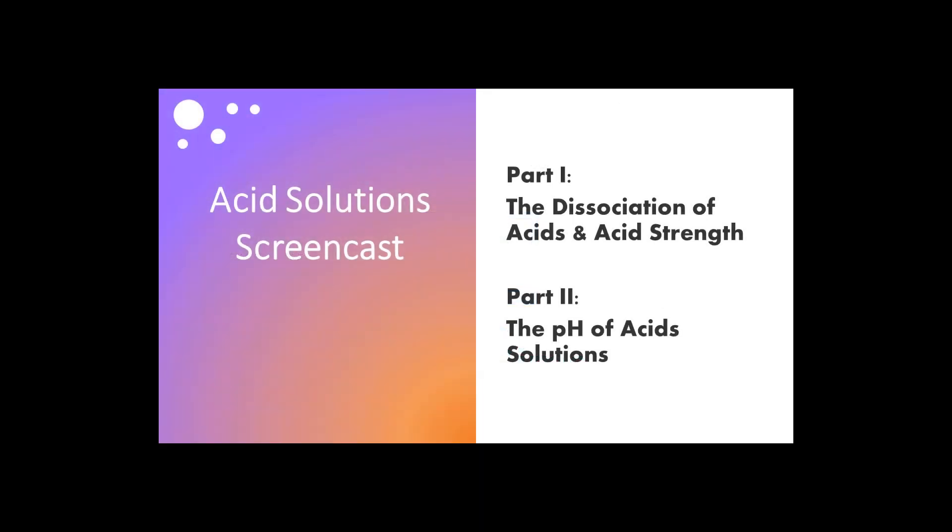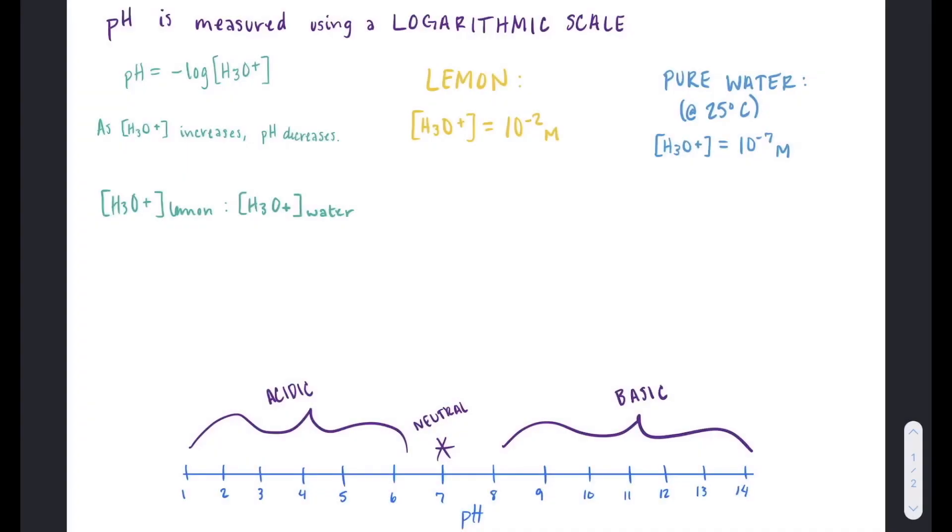When you think about pH, you probably already know that something of a pH of 7 is neutral, something of a pH below 7 is acidic, and something of a pH above 7 is basic.